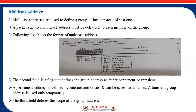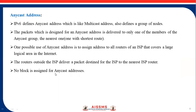Next is anycast address. IPv6 defines anycast address, which is similar to multicast address in that it also defines a group of nodes. However, a packet destined for an anycast address is delivered to only one member of the anycast group — the nearest one. One possible use of anycast address is to assign it to all the routers of an ISP that covers a large logical area in the internet. A router outside the ISP delivers the packet to the nearest ISP router. Note that no block is assigned for anycast addresses.